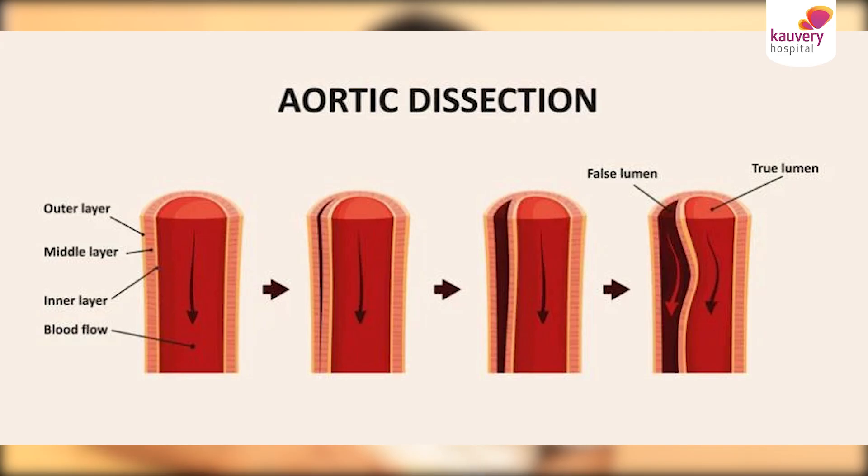What is aortic dissection? Aortic dissection happens when the innermost layer of the aorta tears. So what happens because of aortic dissection? The normal function of the aorta to supply blood to the parts of the body is not carried out, and the blood does not flow to all the organs of the body.